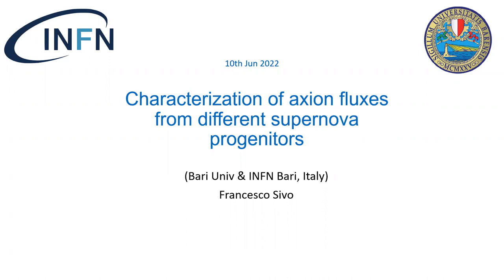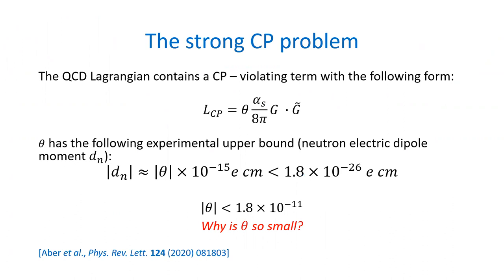Let's start with a brief introduction on the so-called strong CP problem, which is a well-known problem of the QCD Lagrangian, where we have a CP-violating term visible in the upper part of the slide. This term is proportional to a parameter theta, which is related to the neutron electric dipole moment. From experiment, we have a strong upper bound on the dipole moment, so we can give a strong upper bound also on the theta parameter.